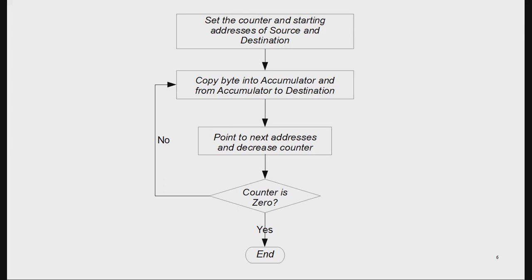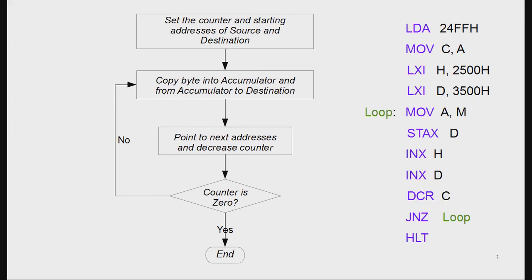Once we pick the counter, that many number of times the action will be executed. This is the flowchart explanation with the program. The first line, LDA, loads the accumulator with the value at address 24FFH — that value becomes the counter.